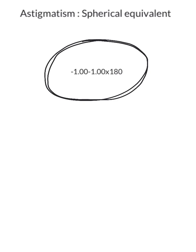It's called taking the spherical equivalent. What you do is take the first number, minus 1, and add it to one half of the second number, which is minus 50. You get minus 150.